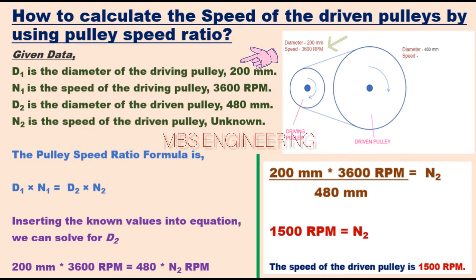D1 is 200 mm, the diameter of the driving pulley. N1 is 3600 RPM, the speed of the driving pulley. D2 is 480 mm, the diameter of the driven pulley. N2 is the unknown RPM, the speed of the driven pulley.